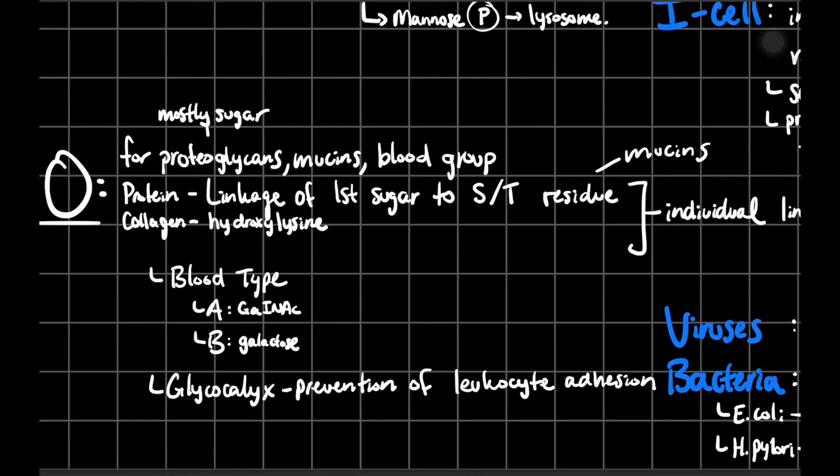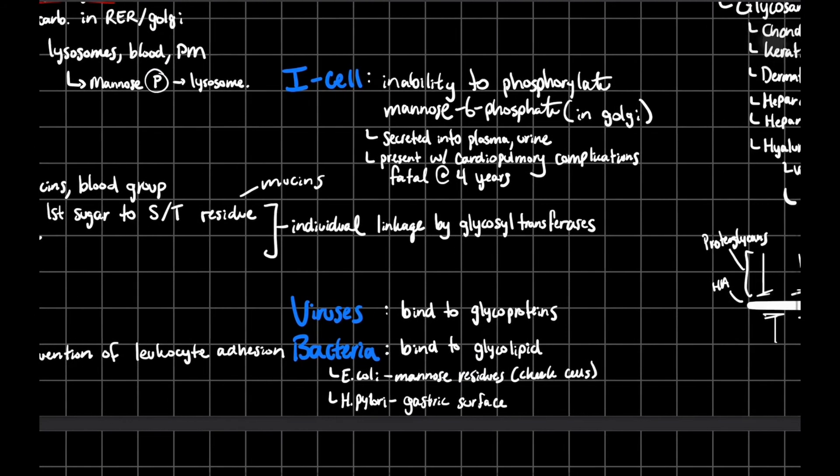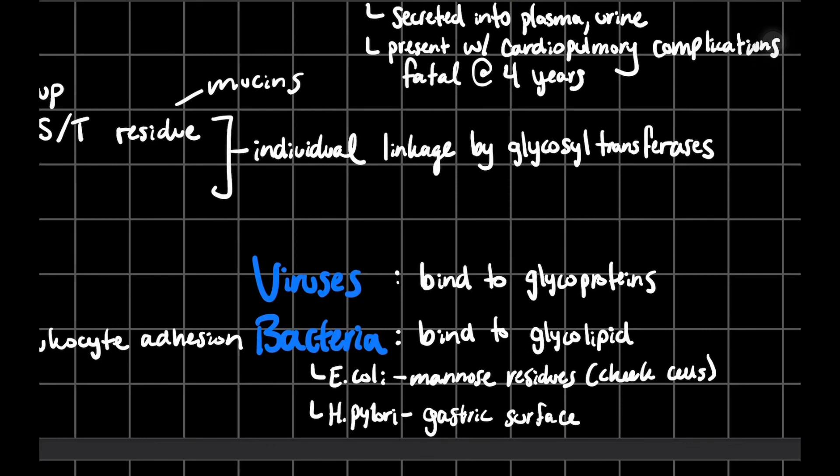Certain diseases affect the O-site glycosylation. Viruses attach to glycoproteins, and bacteria can attach to glycolipids to dock onto your cell and to infect them. Two different bacteria are E. coli and H. pylori. These are just going to be the different residues that they would attach to.